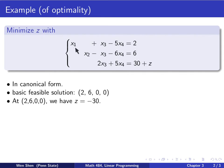Since it's in canonical form, we can write out the basic feasible solution. The basic variables x1, x2 would take the values of the right-hand side, 2 and 6. The non-basic ones, x3 and x4, are just 0. At that solution, z would take the value of negative 30, just moving 30 to the other side.